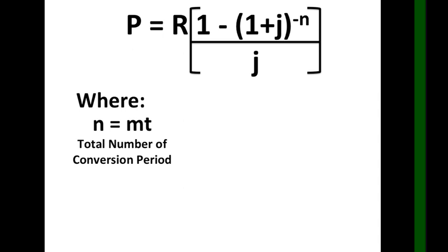We need to consider the following: n equals mt, that is the total number of conversion periods. j equals i over m, which is the nominal rate divided by the frequency conversion period, which is the rate per conversion period.